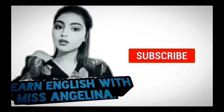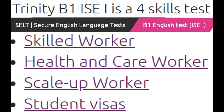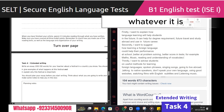This is for fun — Trinity B1, ISC1, four skills test, CELT, secure English language tests, B1 English test, ISC1 — for skilled worker, health and care worker, scale-up worker, and student visas. I will explain extended writing — whatever it is, it is.